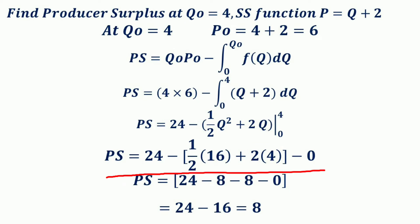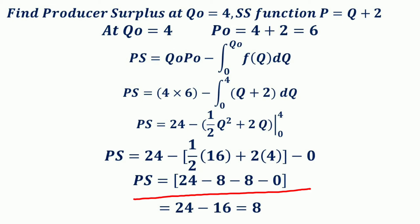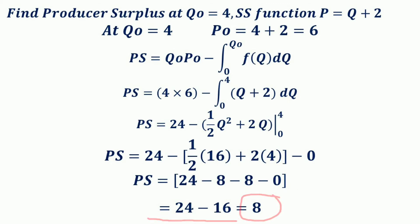Therefore, PS = 24 − [(1/2)(4²) + 2(4)] − 0 = 24 − [8 + 8] = 24 − 16 = 8. So the producer surplus in this example is equal to 8.